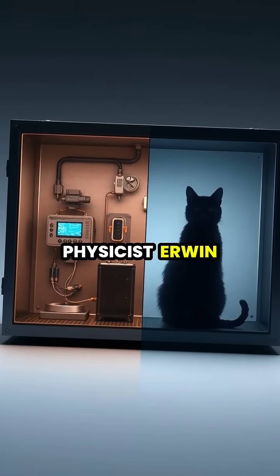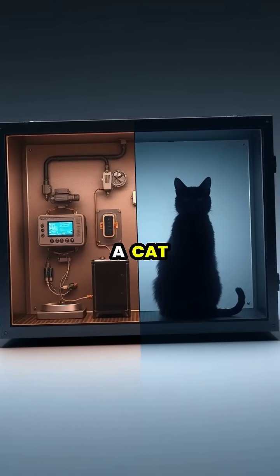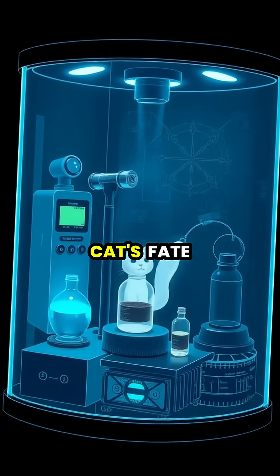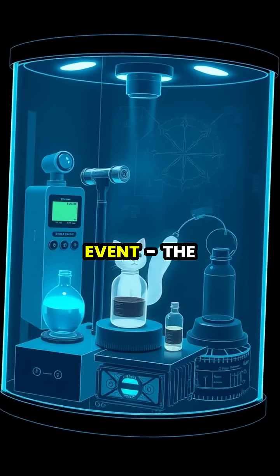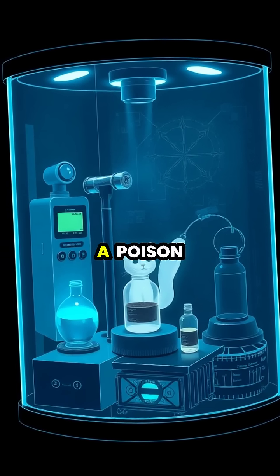This led physicist Erwin Schrödinger to propose his famous thought experiment involving a cat sealed in a box with a quantum trigger mechanism. In this experiment, the cat's fate is linked to a random quantum event, the decay of a radioactive atom that could trigger a poison release.